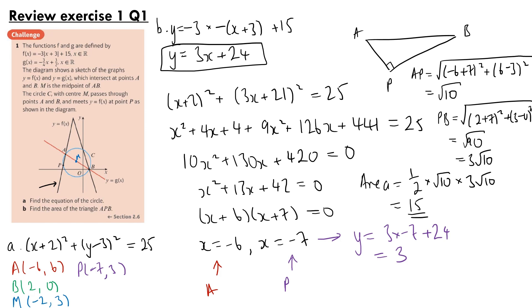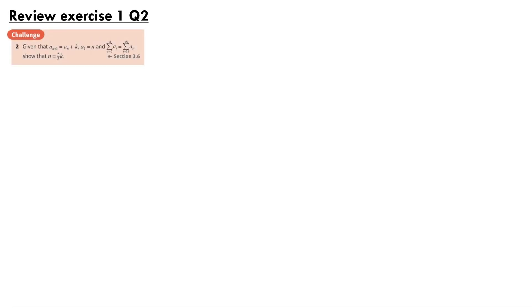And that is our final answer for question 1. For question 2, given that a(n+1) equals a(n) plus k, a1 equals n, and the sum from i equals 6 to 11 of a(i) equals the sum from i equals 12 to 15 of a(i), show that n equals 5 over 2k.